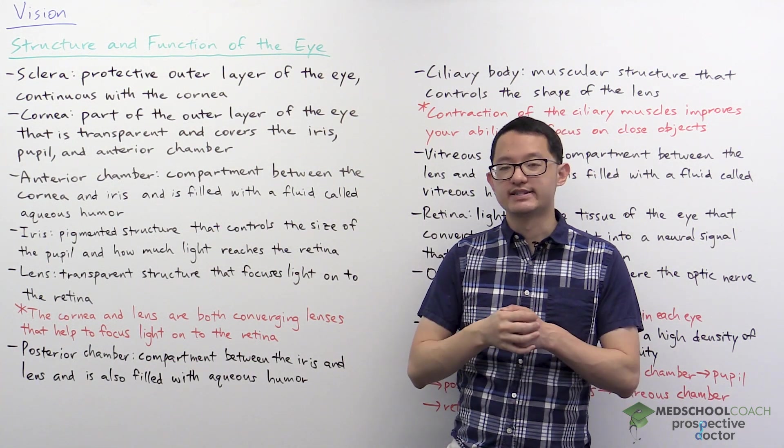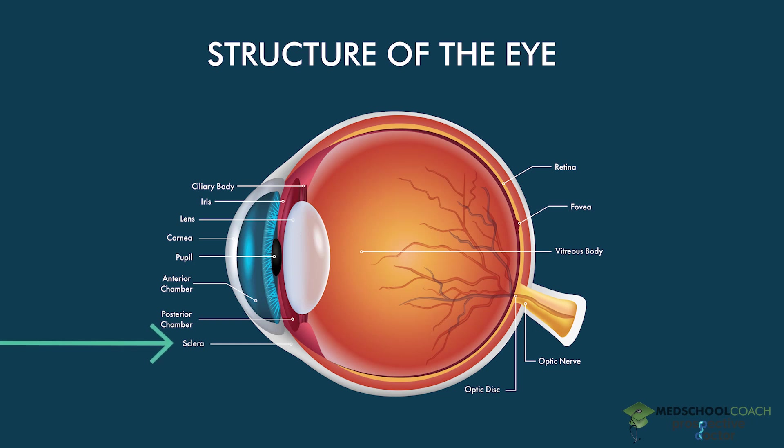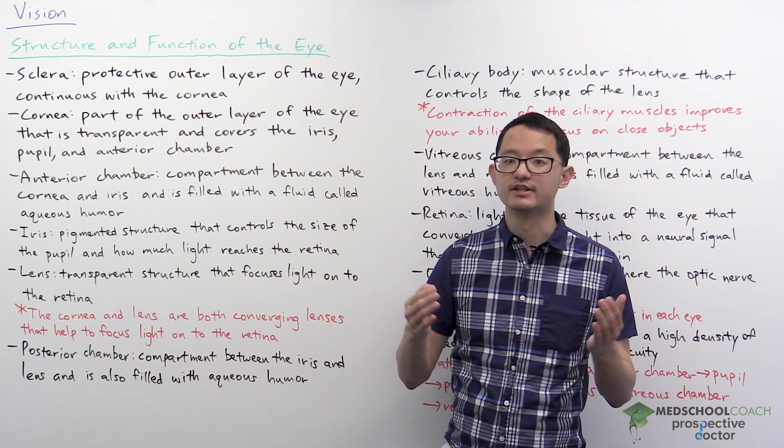To begin, you can take a look at this diagram of the eye. We're going to start with the sclera, which is the protective outer layer of the eye. You can see that the sclera covers the entire eye except the part in the front, which is the cornea.